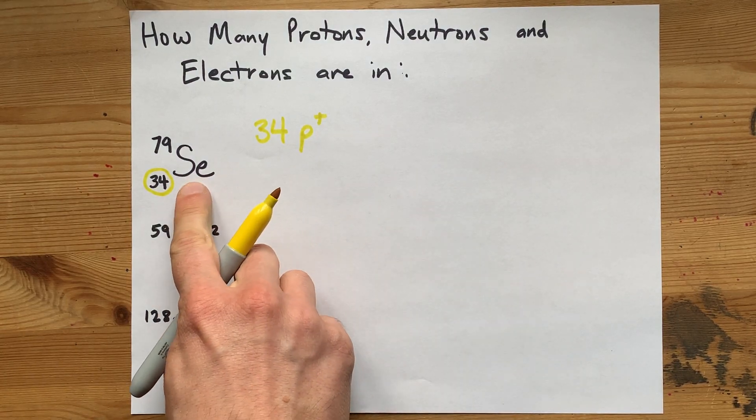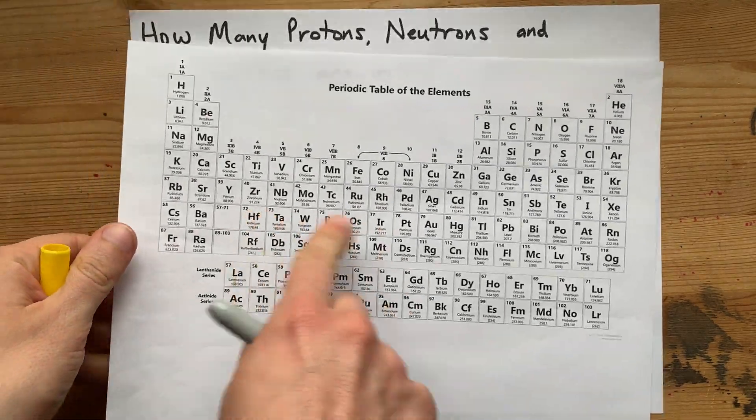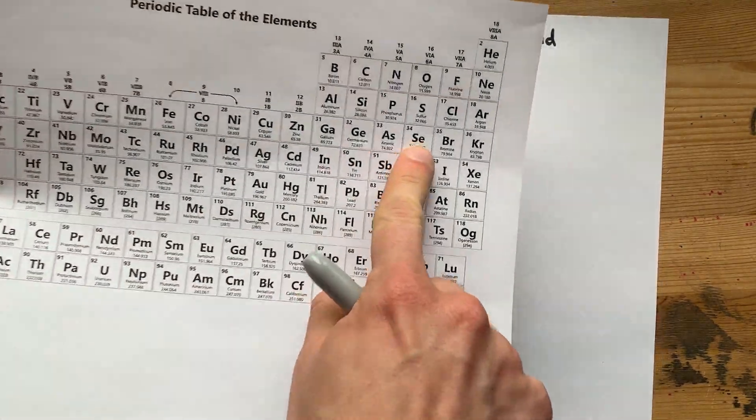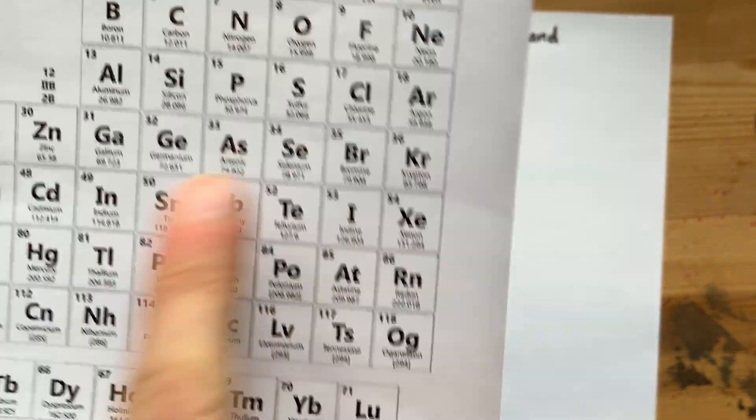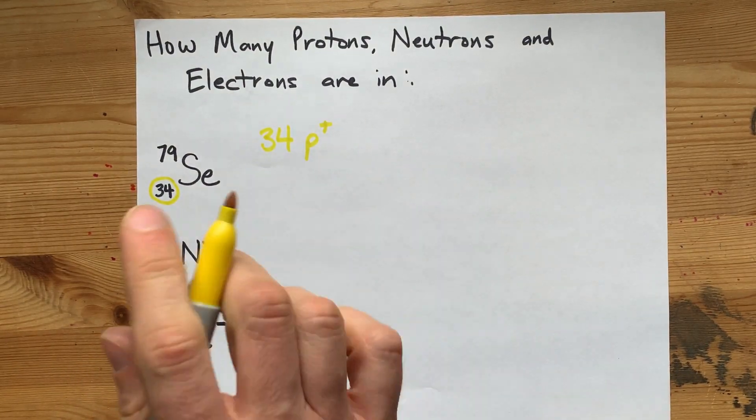But also, the symbol for the atom gives you that as well. Now, selenium is here, and you'll notice on my periodic table it's element 34. That's telling you how many protons are in it.